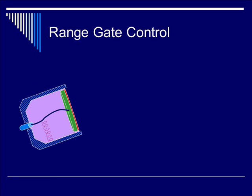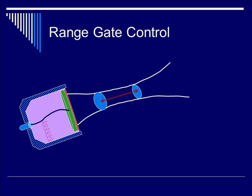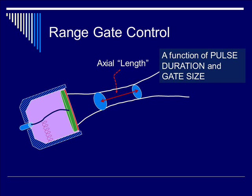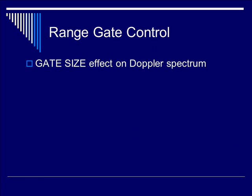As you recall, our prototype transducer creates a transducer beam emanating from the transducer towards the soft tissue of interest. The sample volume is depicted between these two cross sections of the beam width. Specifically, the sample volume has a longitudinal or axial component, which is a function of both the pulse duration as well as the gate size. The other dimension — the X or Y — is characterized by the beam width, which is a function of beam frequency, aperture, and the transducer design.